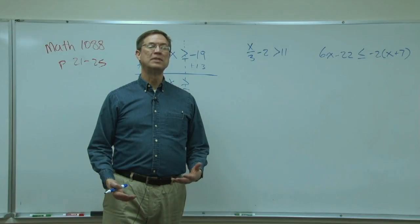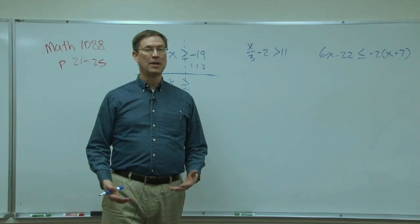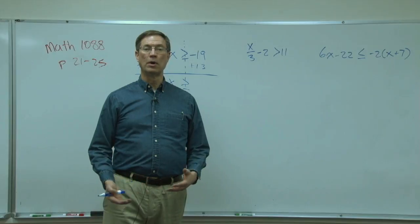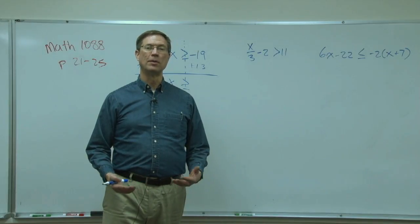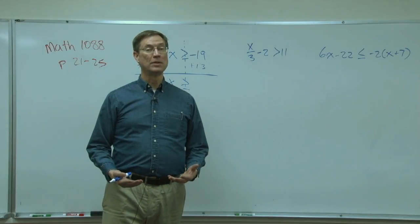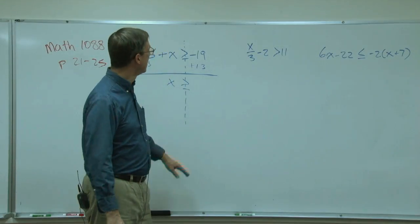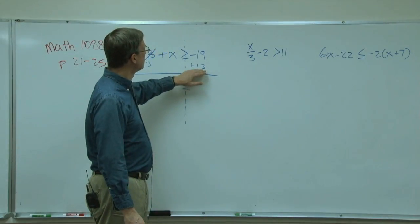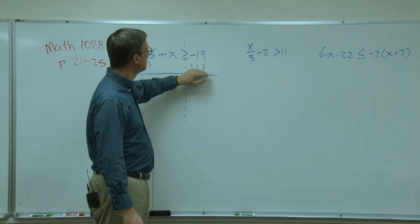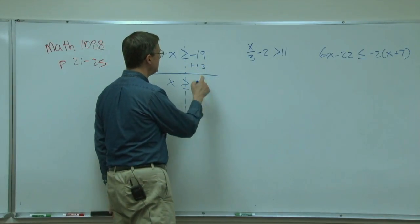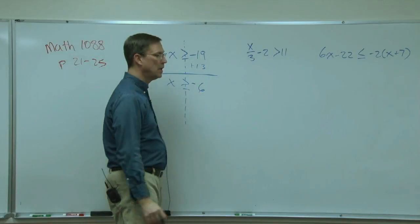If we're adding and the signs are the same, add and keep the common sign. So the signs are different, so we'll subtract the smaller from the larger, and 18 minus 13 is 6. Keep the sign of the larger, so negative. I just finished one of your problems for you, sorry.